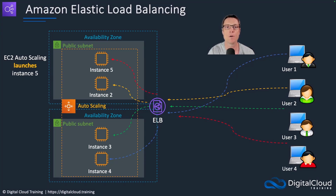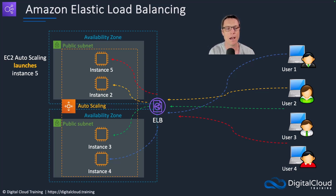As new users come along, they get distributed. By default, auto scaling is going to try and spread the load across multiple availability zones, and the load balancer sitting in front is then going to distribute connections to all of the instances. Through integration between auto scaling and load balancing, as the auto scaling group launches those instances, it's going to notify the load balancer so it knows they're there and can start sending connections through to them.